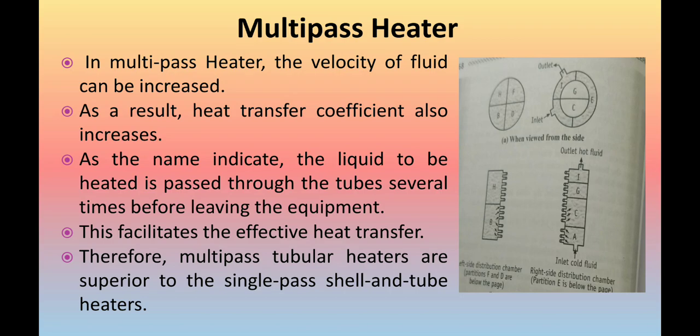Now we will talk about the construction of this multipass heater. A tubular multipass heater consists of a bundle of parallel tubes, as you can see in the diagram. The ends of these tubes are expanded into two tube sheets. The tube bundle is wrapped in a cylindrical casing, and two distribution chambers are provided at each end of the casing.